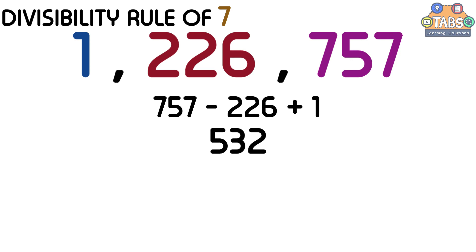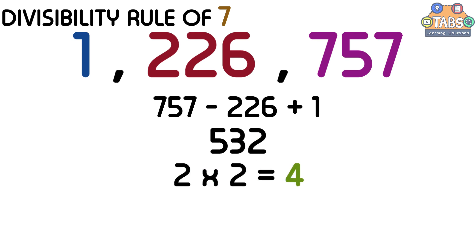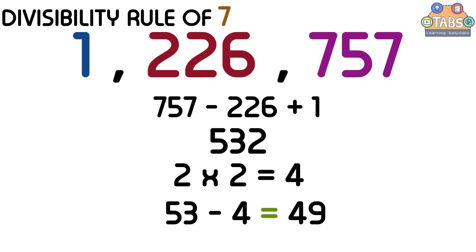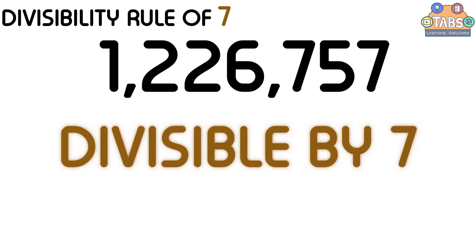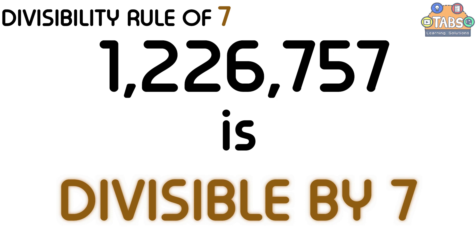From 532, we can perform the two steps. The first step is we need to double the last digit, which is 2. 2 times 2 is equal to 4. Then we subtract 4 from the remaining digits, which is 53. 53 minus 4 is equal to 49. And 49 is a multiple of 7. Therefore, 1,226,757 is divisible by 7.